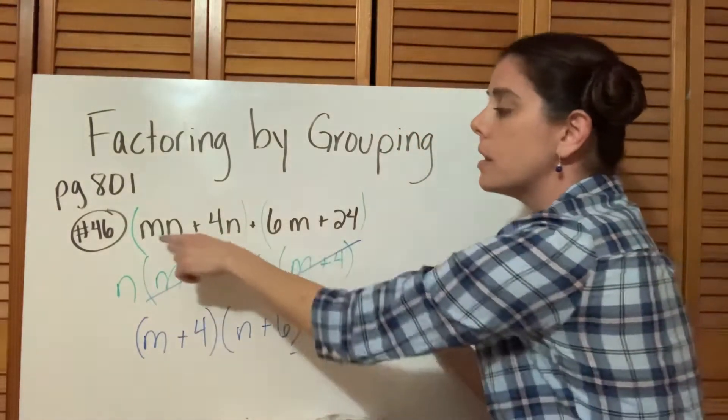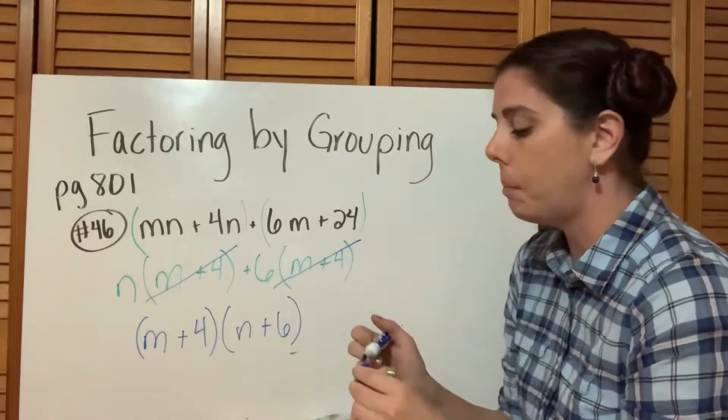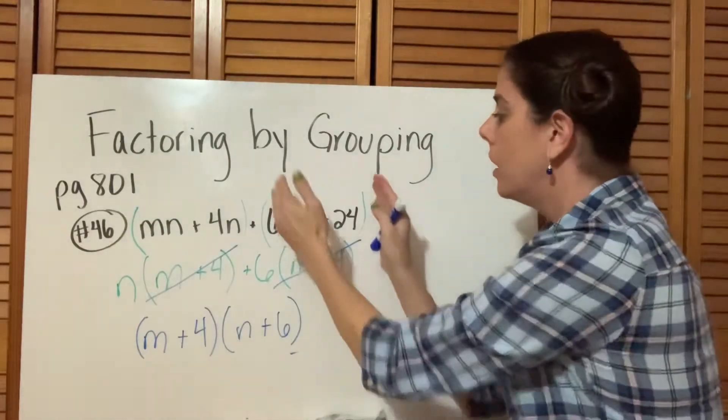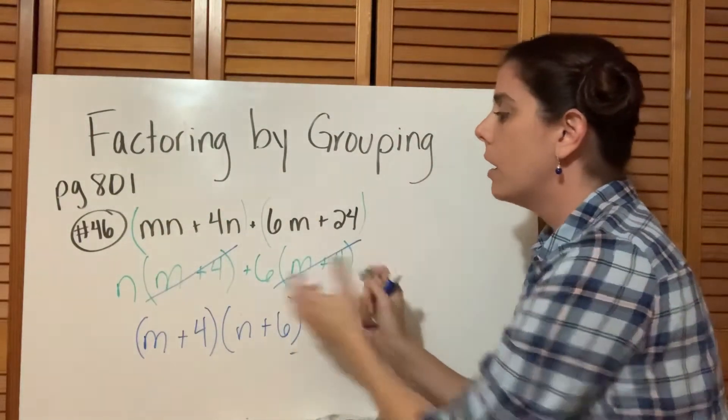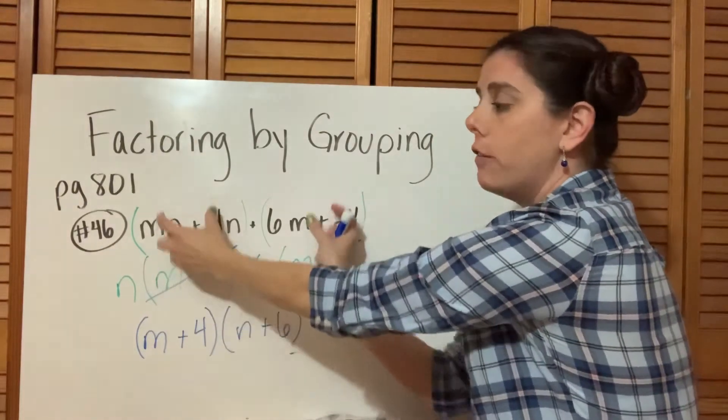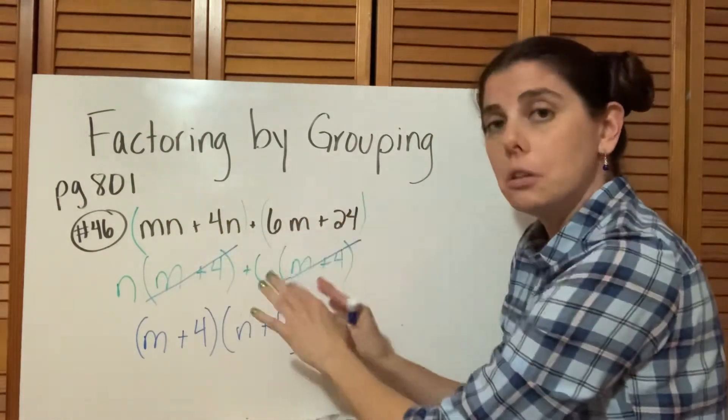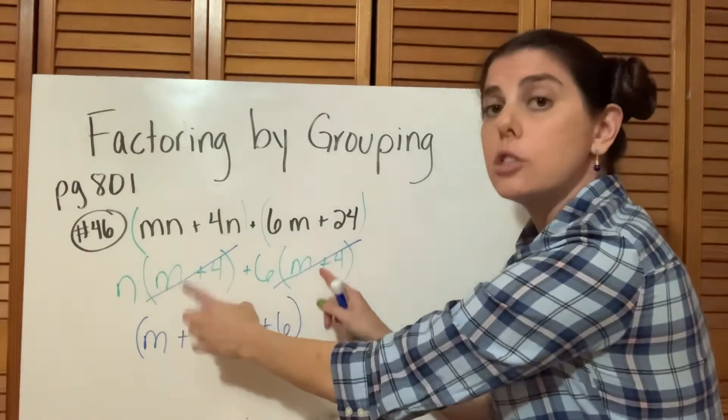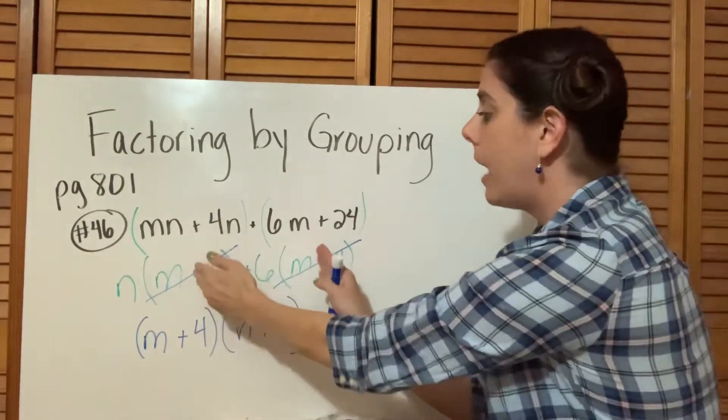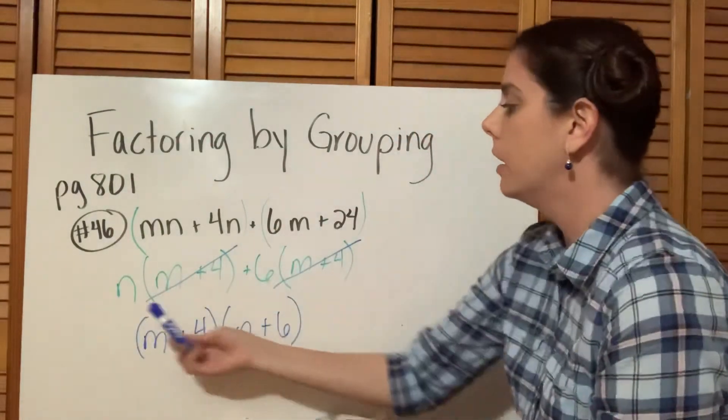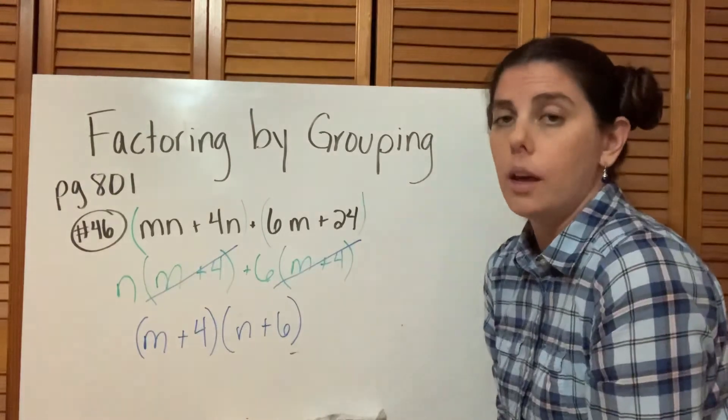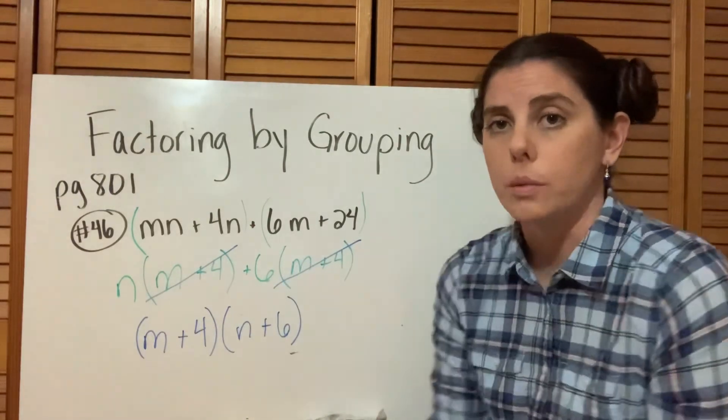This is an example of factoring by grouping where we group the first two terms together, group the last two terms together, and find the GCF of each. If you do it correctly, you should end up with what's in parentheses being exactly the same, and that becomes a GCF you can pull out to the front. What is left over becomes your parentheses in the back. I will do another one of these problems for you.